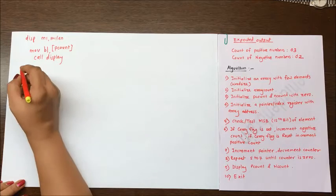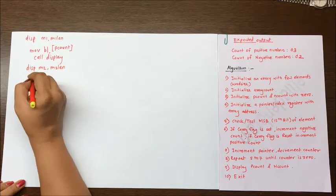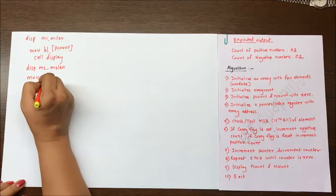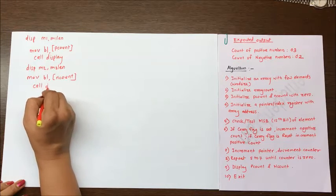After that we have to display the second message disp m2, m2 len. Then move again n count in bl and call display. So here we are calling display procedure twice.